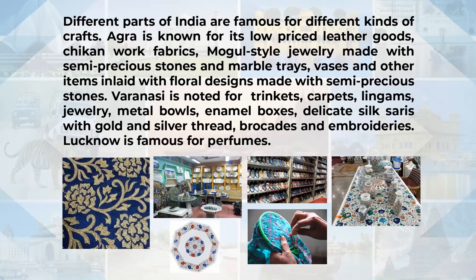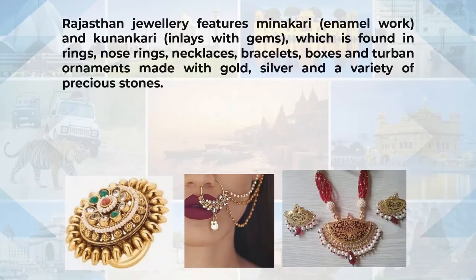Varanasi is noted for its trinkets, carpets, lingams, jewellery, metal bowls, enamel boxes, delicate silk sarees with gold and silver thread, brocades and embroideries. Lucknow is famous for its perfumes. Rajasthani jewellery features Meenakari — enamel work — and Kundankari — inlay of gems — found in rings, nose rings, necklaces, bracelets, boxes and turban ornaments, made with gold, silver and precious stones.